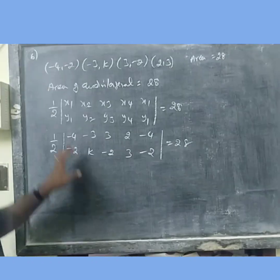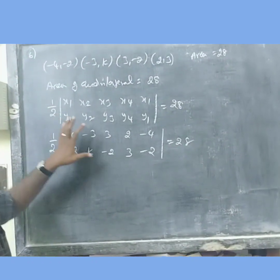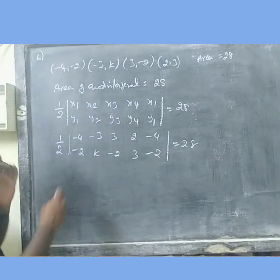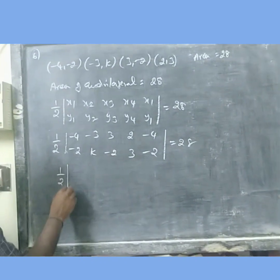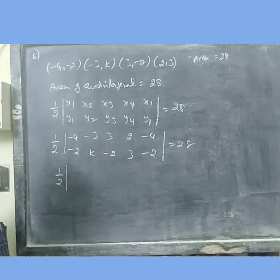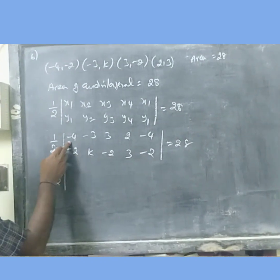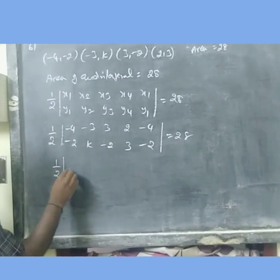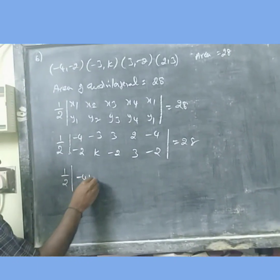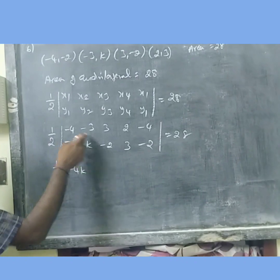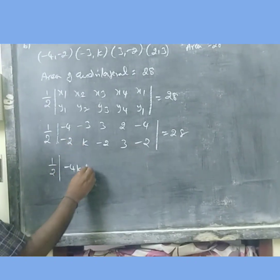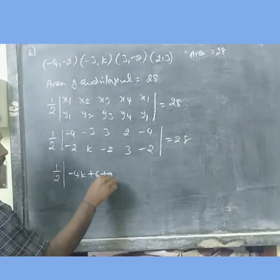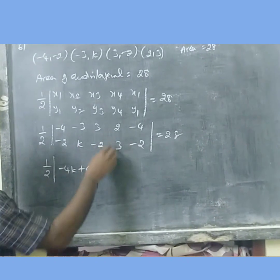So when we apply the coordinates x1, y1, x2, y2, as usual, the calculations apply — first multiply in the right. So: minus 4 into k, minus 4k, then plus 3 times 3 is 9, and then minus 4. First part is done.